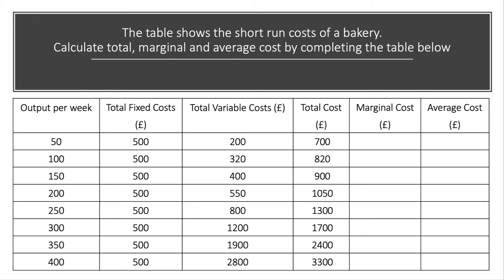The marginal cost is the change in total costs from producing or supplying one extra unit. Now because output is going up in units of 50, we have to divide the change in total costs by 50 to get a one-unit change. So for example, going from 50 to 100, the total variable cost rises by £120, and we have to divide by 50 to get the marginal cost. If we do the calculations, here's a check for your answers — that's what happens to marginal cost.